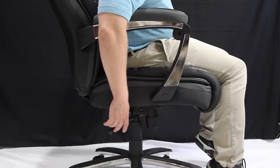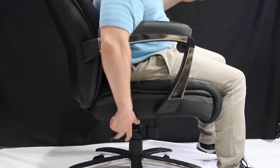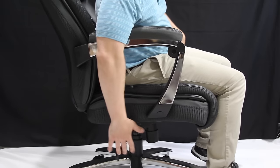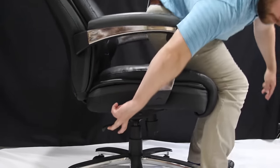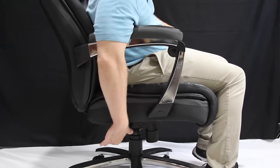To adjust downwards, leave your weight in the chair and pull the lever. That's it. I'll do it one more time for you. Stand up, pull, and pull to go down.